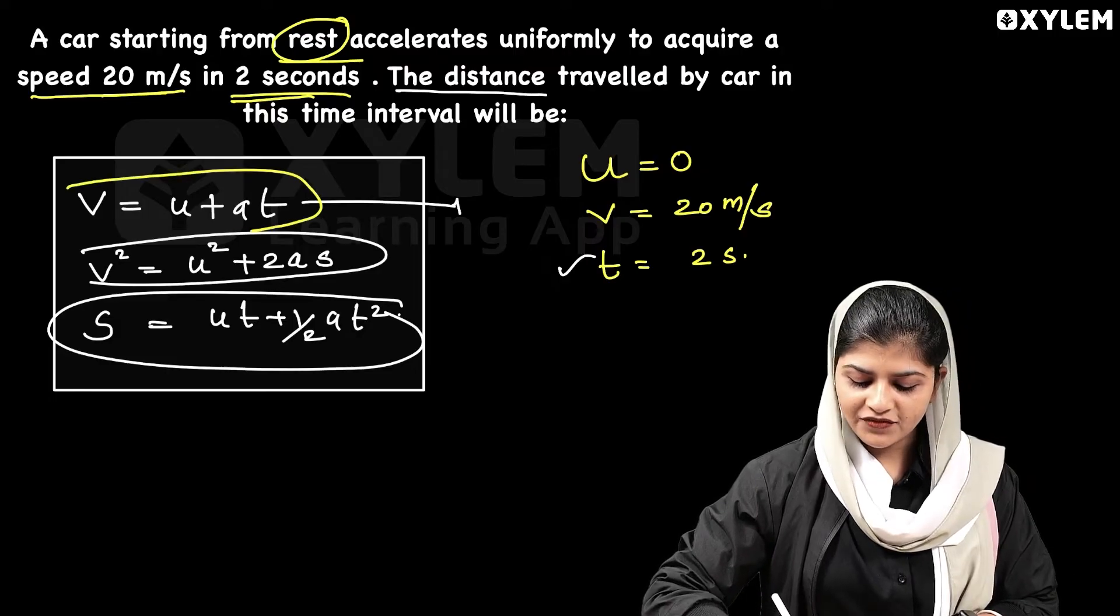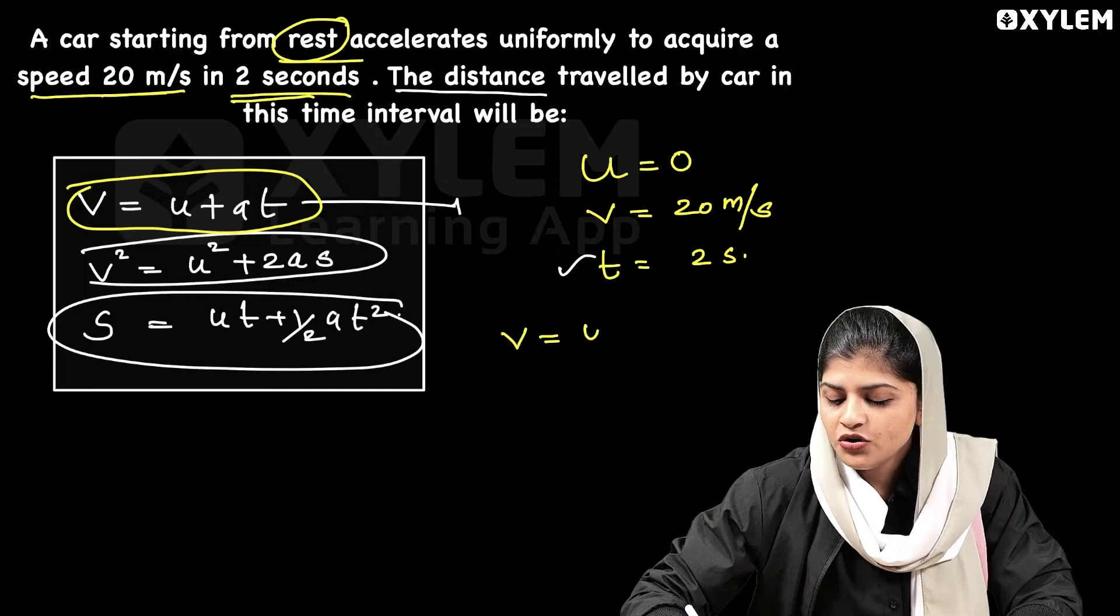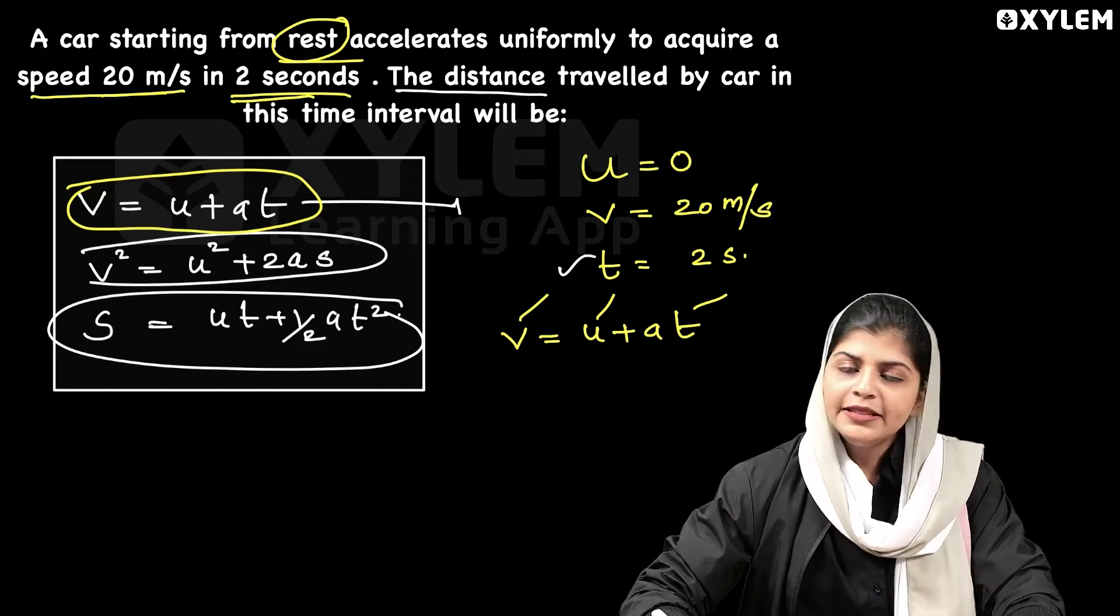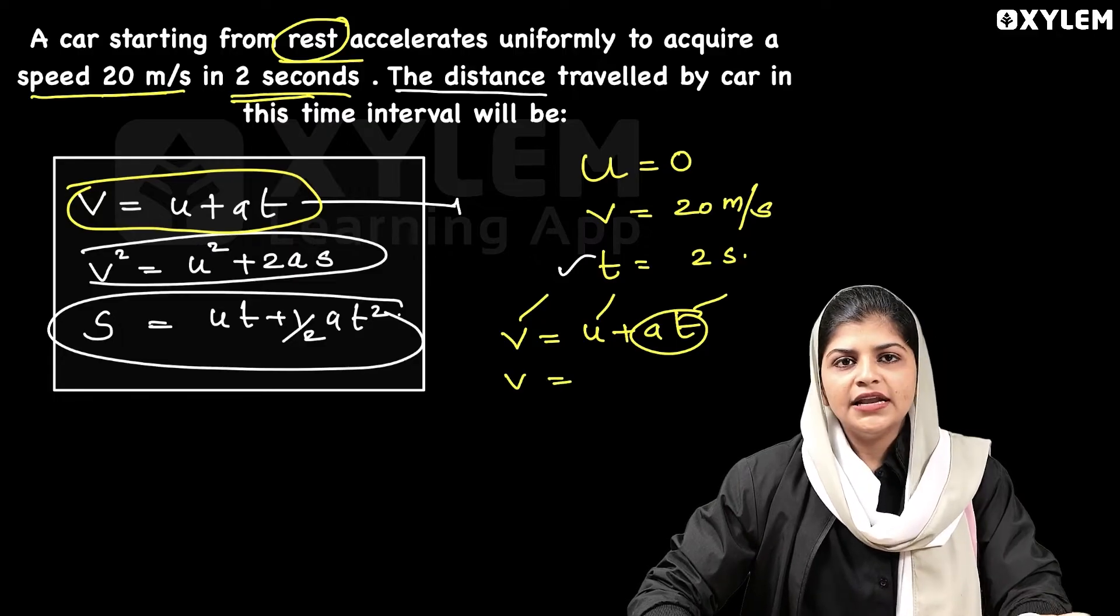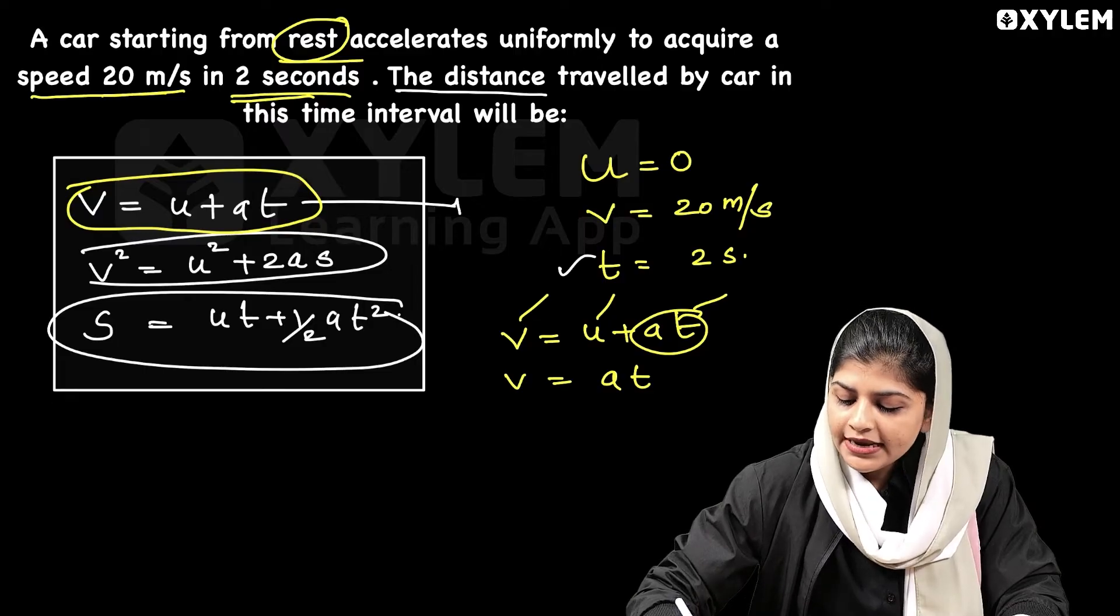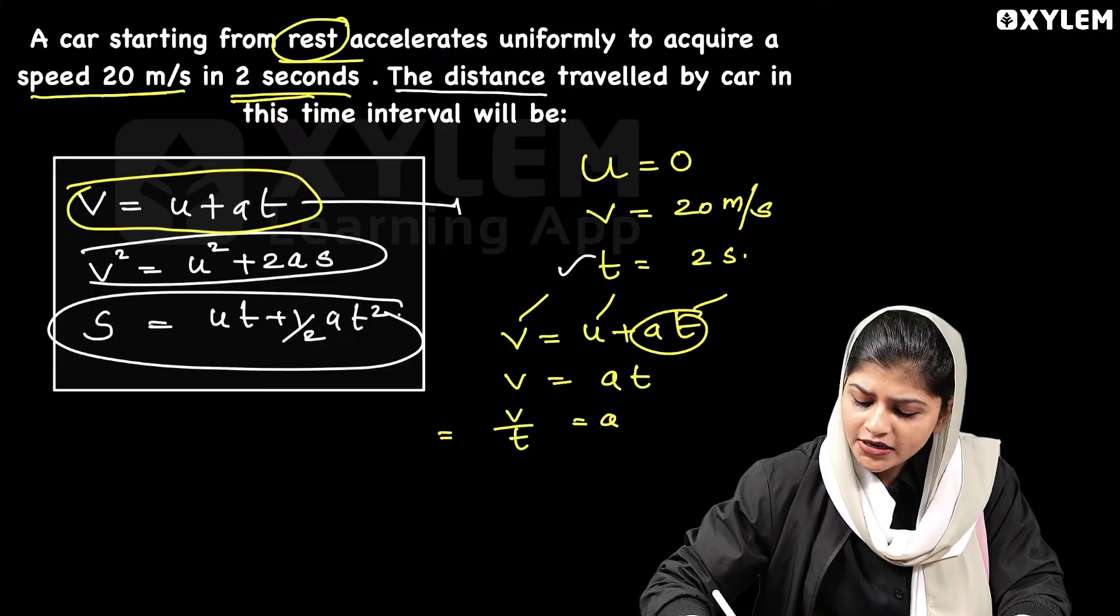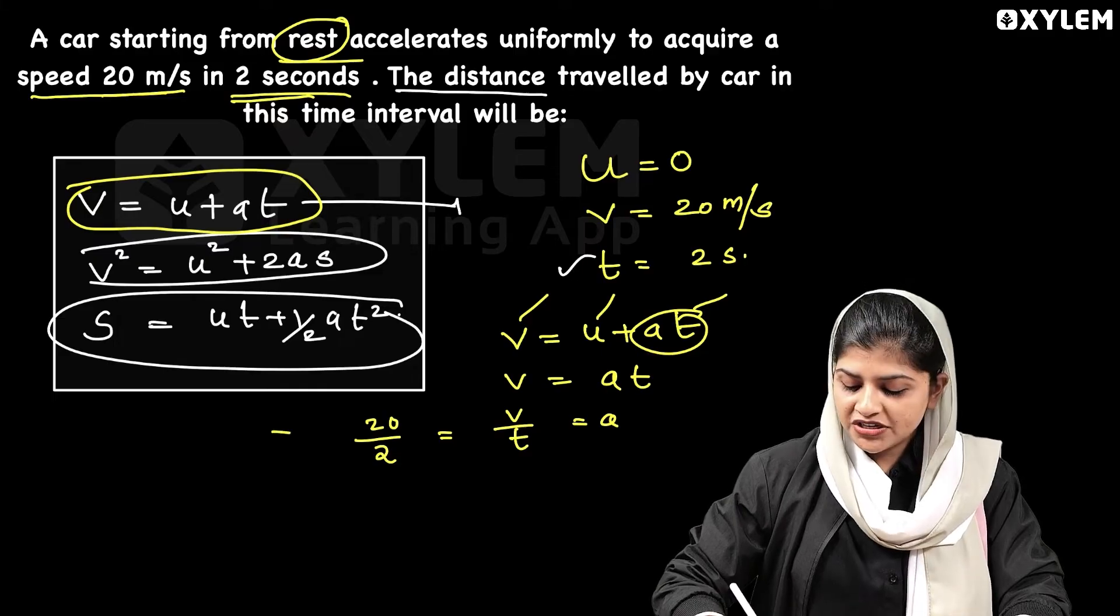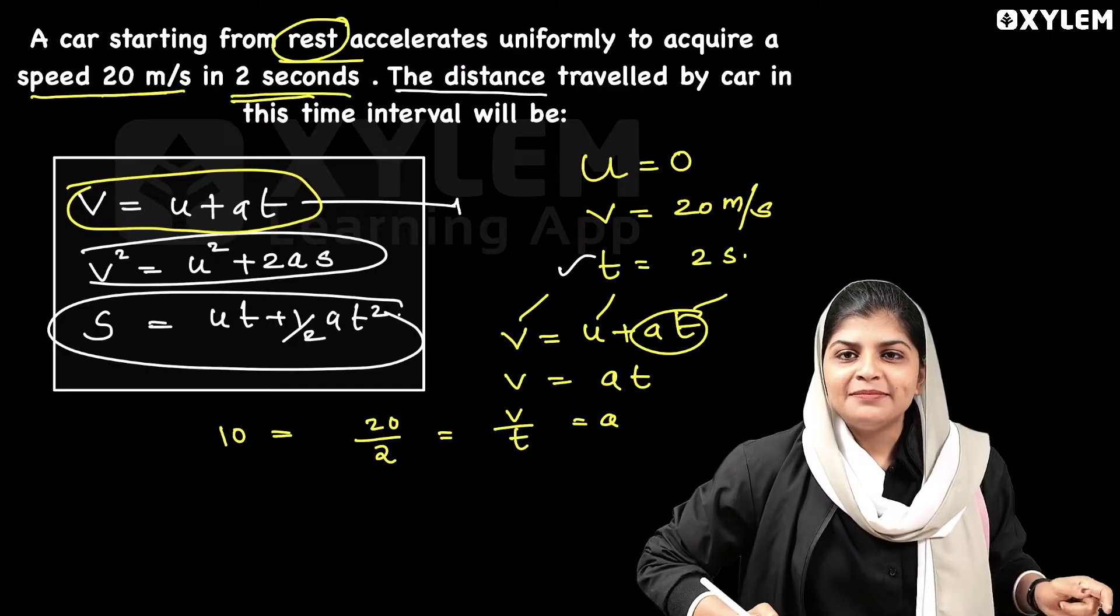First equation: v is equal to u plus at. It is not a problem. We apply it. V is equal to u plus at. Since u equals zero, v equals at. So a is equal to v by t. That is equal to v, which is 20, divided by t, which is 2. So 20 by 2 equals 10 meter per second square.